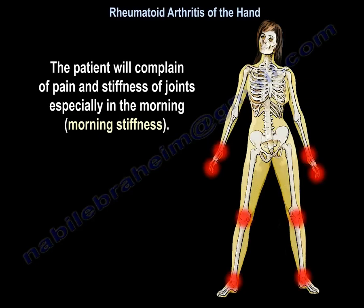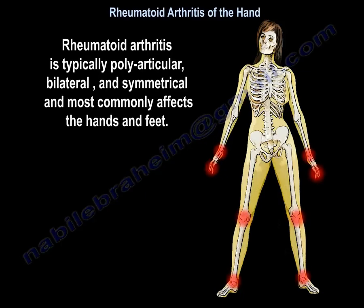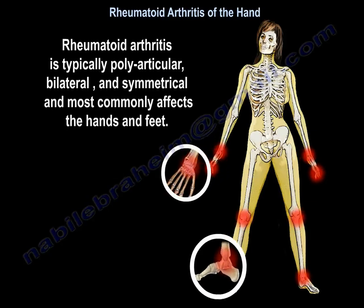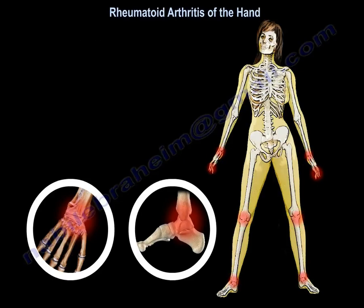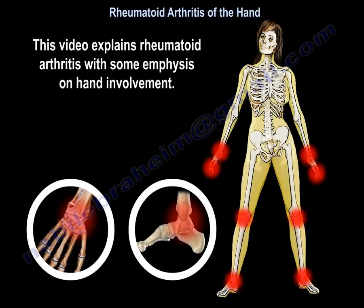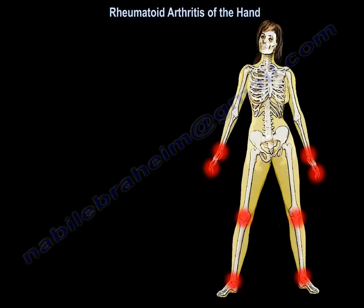Patients complain about pain and stiffness of joints, especially morning stiffness. Rheumatoid arthritis is typically polyarticular, bilateral, and symmetrical, and most commonly affects the hands and feet. This video explains rheumatoid arthritis with some emphasis on hand involvement.